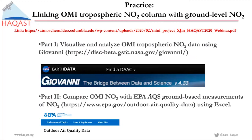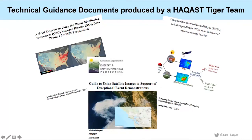Thank you very much. Just to finish up with the presentation — as part of one of our HACAST Tiger teams, there are a few technical guidance documents that were produced that I wanted to make everyone aware of. Our hope is that some of these might not just be of interest, but might actually be of use to some of you. The first one is a brief tutorial on using the Ozone Monitoring Instrument (OMI) nitrogen dioxide data product for SIPs, which links with what Xiaoming has just been showing can be done through Giovanni.